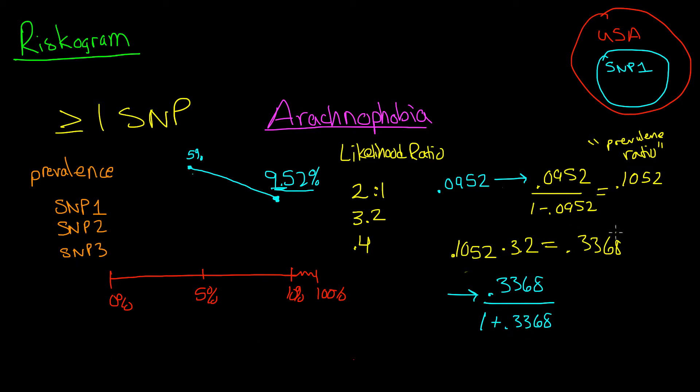And the total number of people is going to be one plus the people that have it. Since this was a ratio, it was implied that it was 0.3368 to one. So this many people have it over the total number of people, which would be everyone.